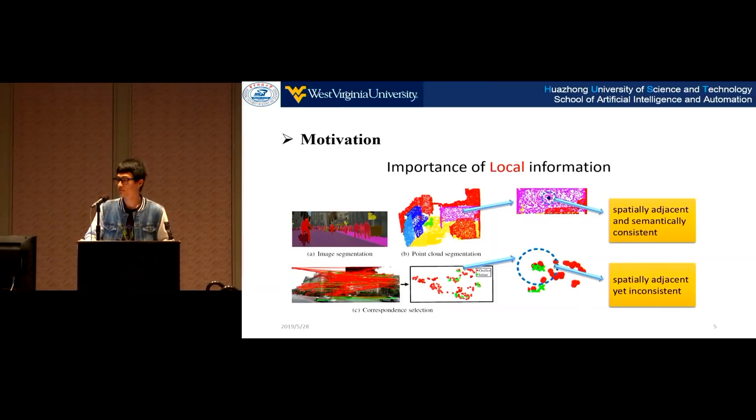Learning to find good correspondences is the first learning-based method towards correspondence selection to the best of my knowledge. This method uses MLP to extract features and employs context normalization to fuse global information. However, each correspondence is individually processed without any local information involved. So our major motivation is trying to integrate some reliable local information because local information has been the cornerstone in many learning-based methods for image or point cloud classification and segmentation. As shown in the figure, for a query point in a point cloud, the spatial adjacency is semantically consistent. This consistency makes sure that spatially local information is reliable.